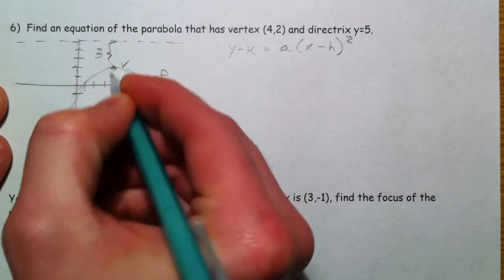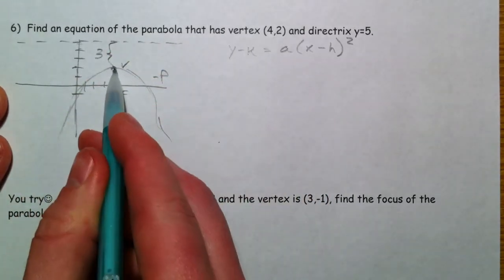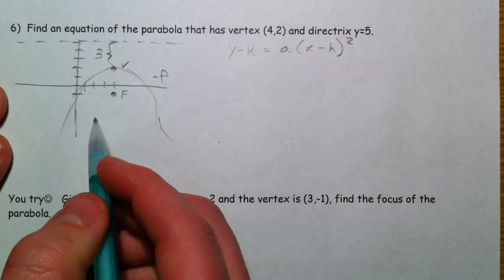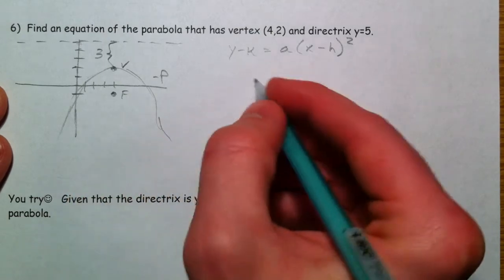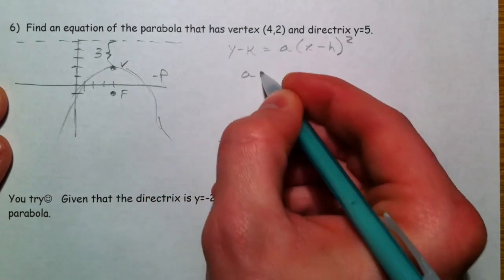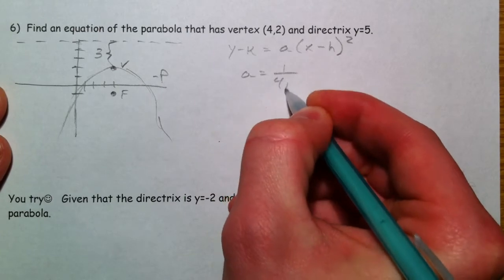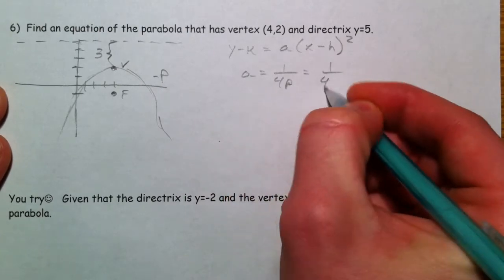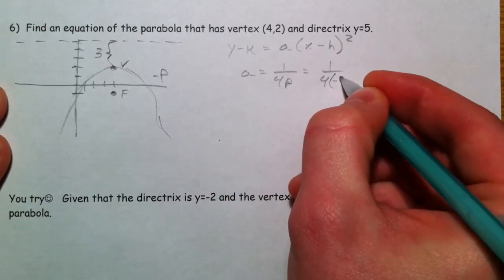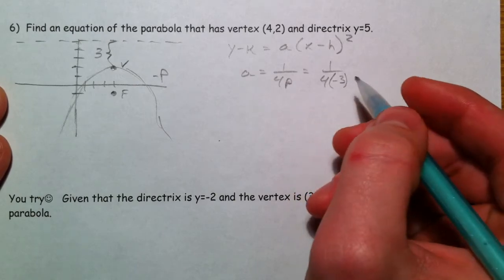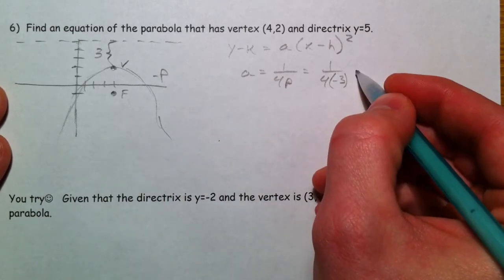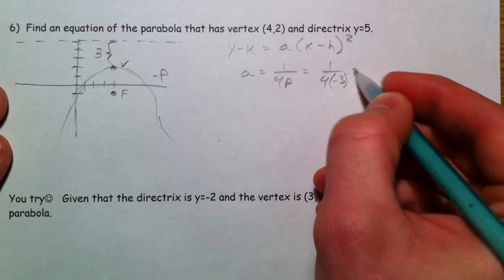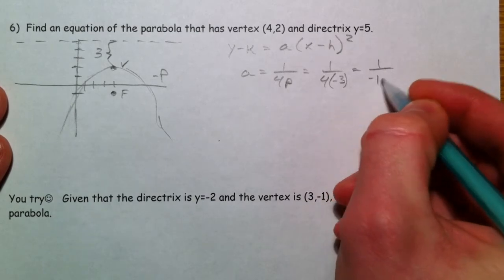p is 3, because it's 3 from the vertex to the directrix. And so if p is 3, a equals 1 over 4 times p, which is 1 over 4 times a negative 3. Because p is negative, because it opens down. So 1 over negative 12.